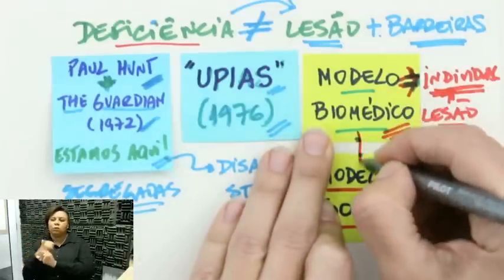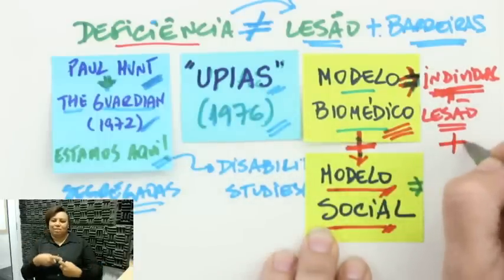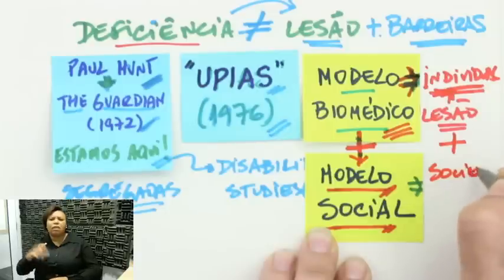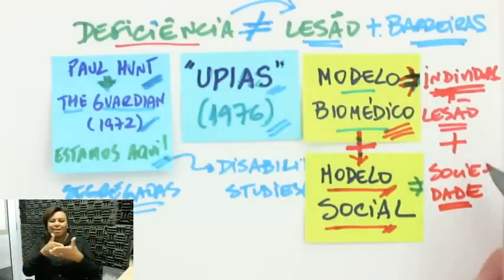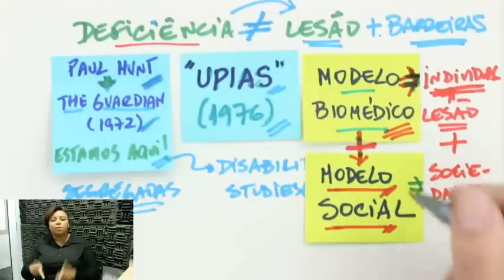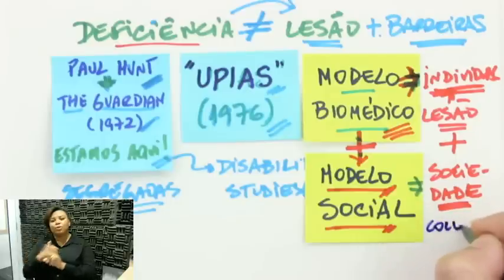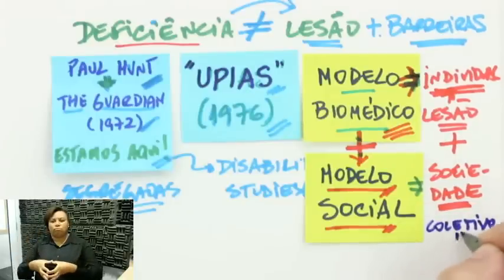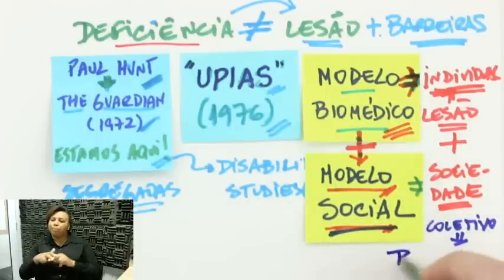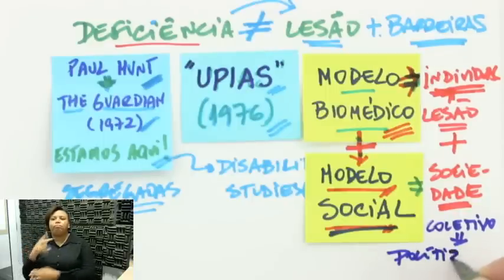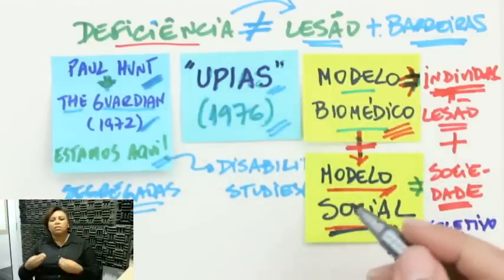As pessoas com deficiência estavam praticamente presas em suas casas, segregadas da sociedade, não tendo acesso a uma vida normal, com inclusão em todos os espaços. Esse movimento das UPIAS ficou conhecido como precursor de uma mudança no que a gente chama de Disability Studies — os estudos da deficiência. A principal contribuição da primeira geração foi questionar o modelo biomédico, que via a deficiência até então só na área da saúde como uma questão individual — ou seja, a deficiência era igual à lesão.